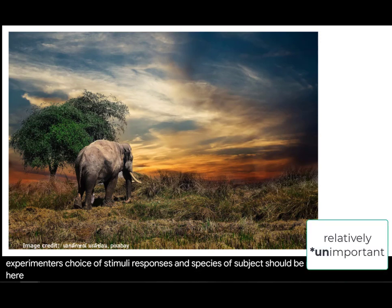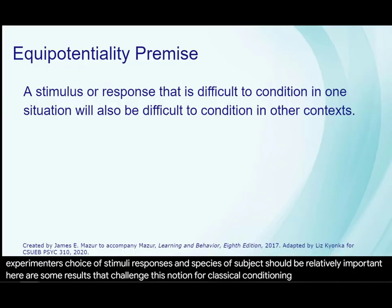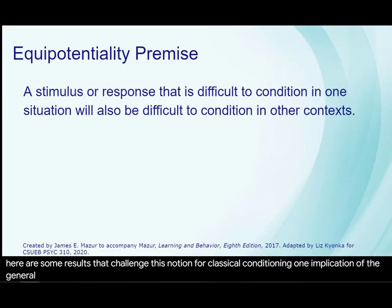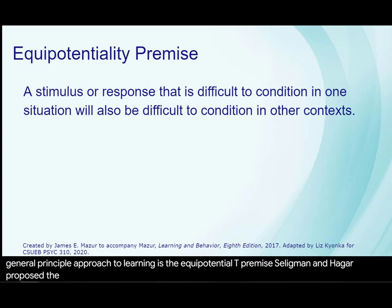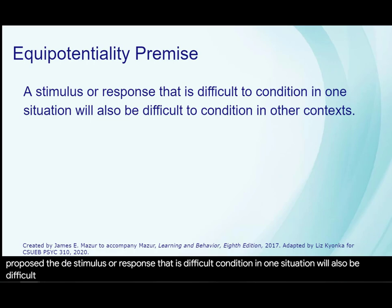Here are some results that challenge this notion for classical conditioning. One implication of the general principle approach to learning is the equipotentiality premise. Seligman and Hager proposed that a stimulus or response that is difficult to condition in one situation will also be difficult to condition in other contexts.